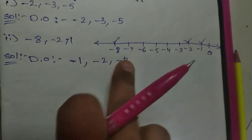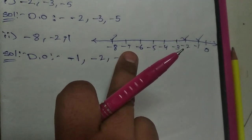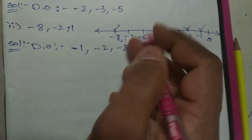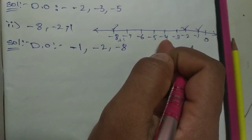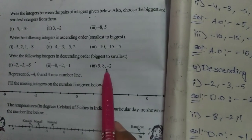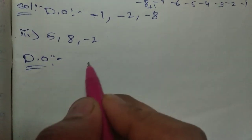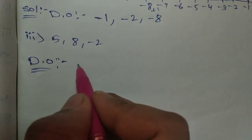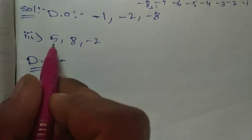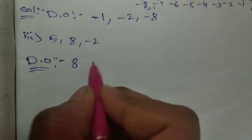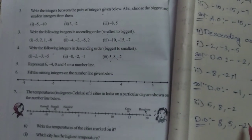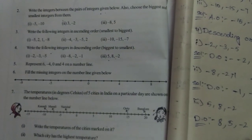Third question for descending: five, eight, minus two. Which one is the biggest integer now? First check the positive integers — five and eight are positive, and eight is always the biggest among them. After that five, and the remaining one is the negative integer minus two. Descending order: eight, five, minus two.